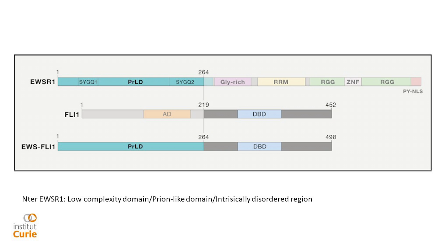EWS, or EWSR1, is an RNA-binding protein with a C-terminal domain that includes an RNA recognition motif. The precise function of EWS is not yet very clear — it's a ubiquitous protein expressed in every tissue. It has been involved in splicing, in transcription initiation, in transcription elongation, and in microRNA biology, but its precise role in terms of mechanism is not clearly understood yet.